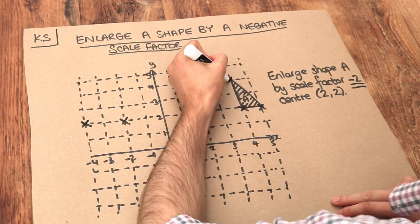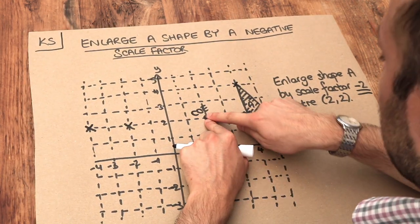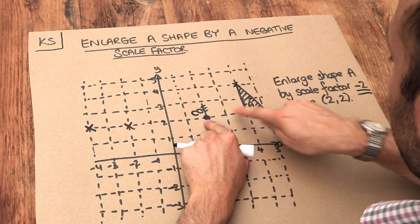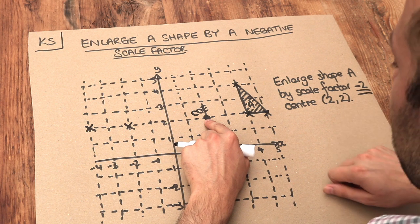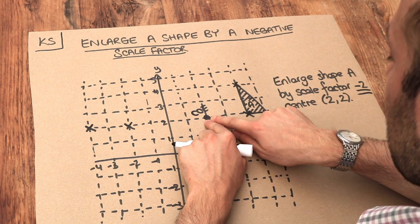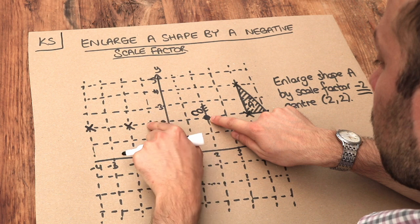And let's finally do this point at the top. That from the centre of enlargement is 2 right and 2 up. Now 2 multiplied by minus 2 we already know is minus 4. So the 2 right becomes 4 left, 2, 3, 4.